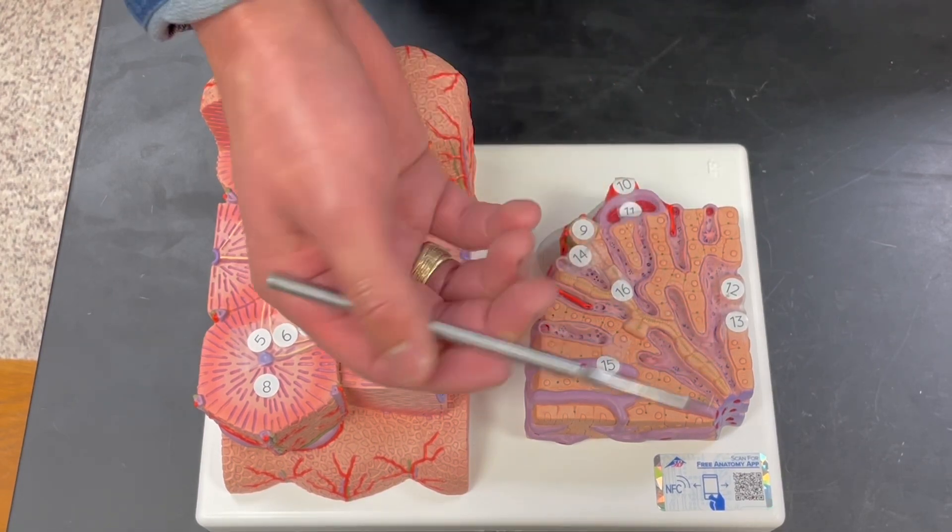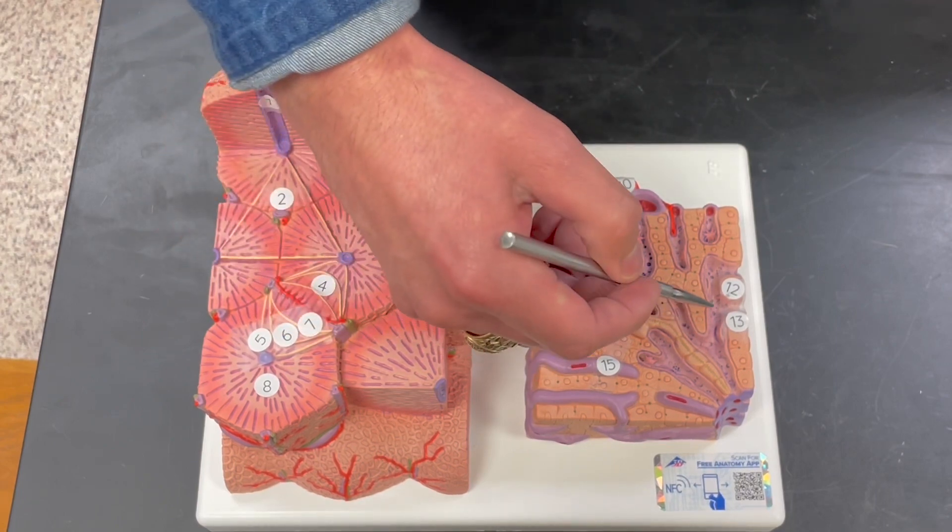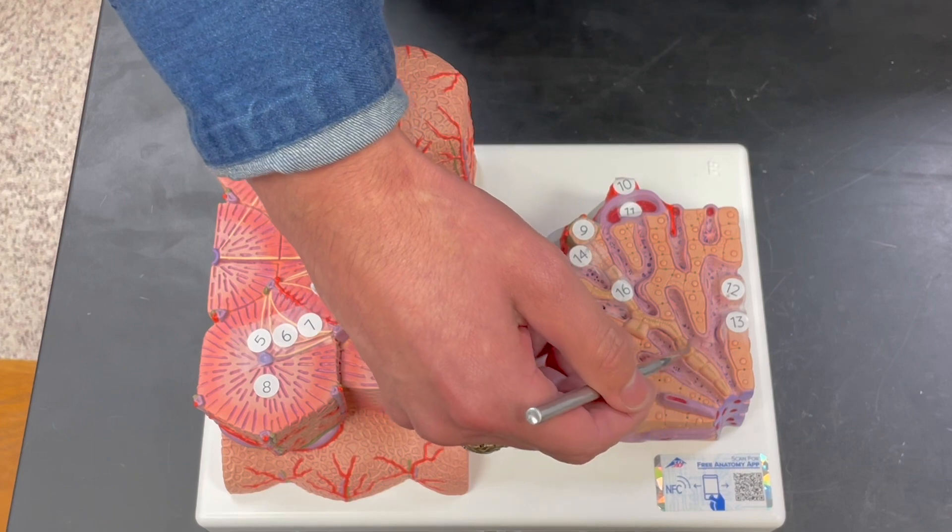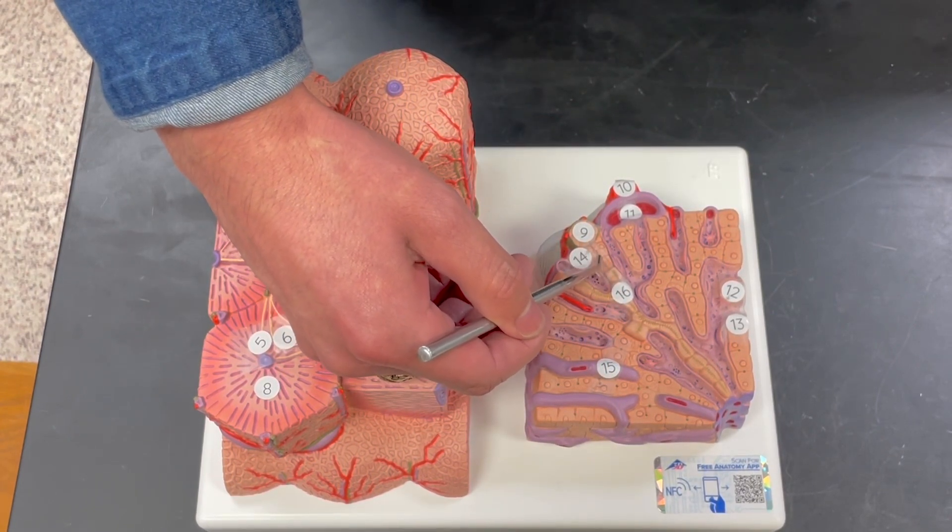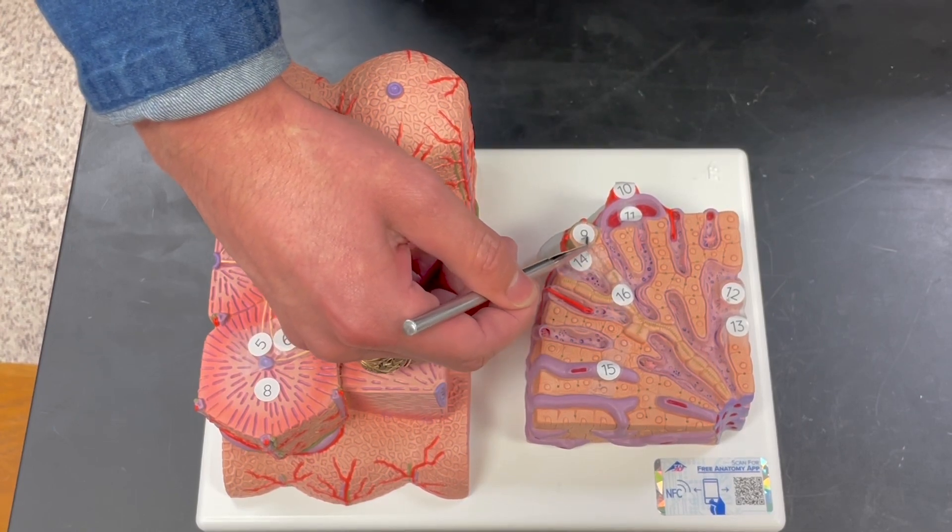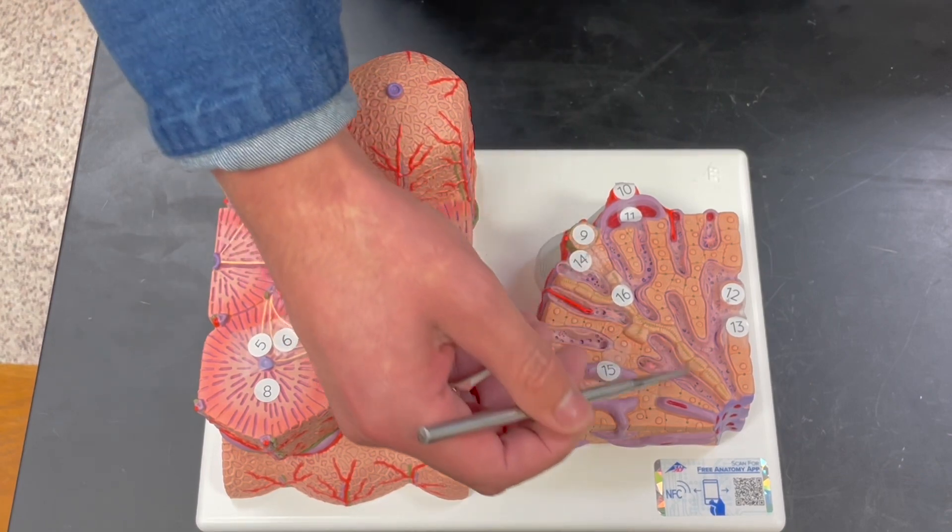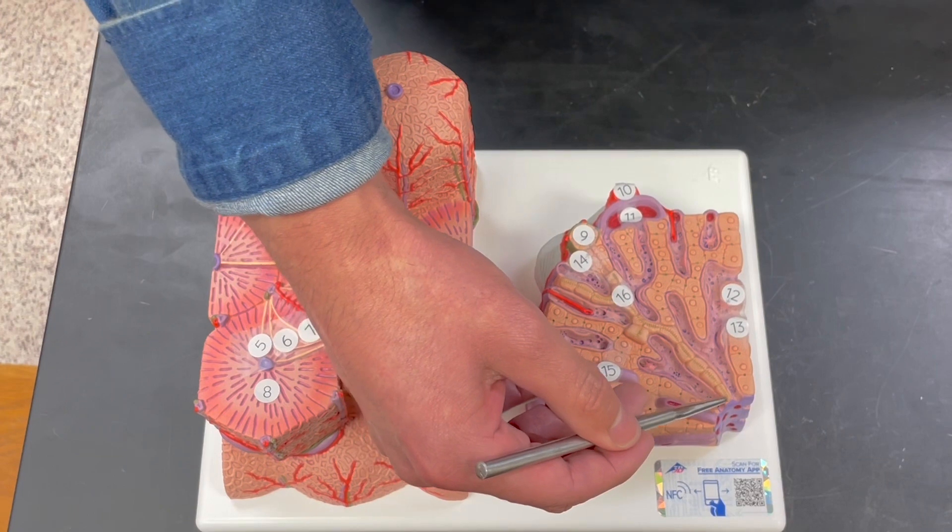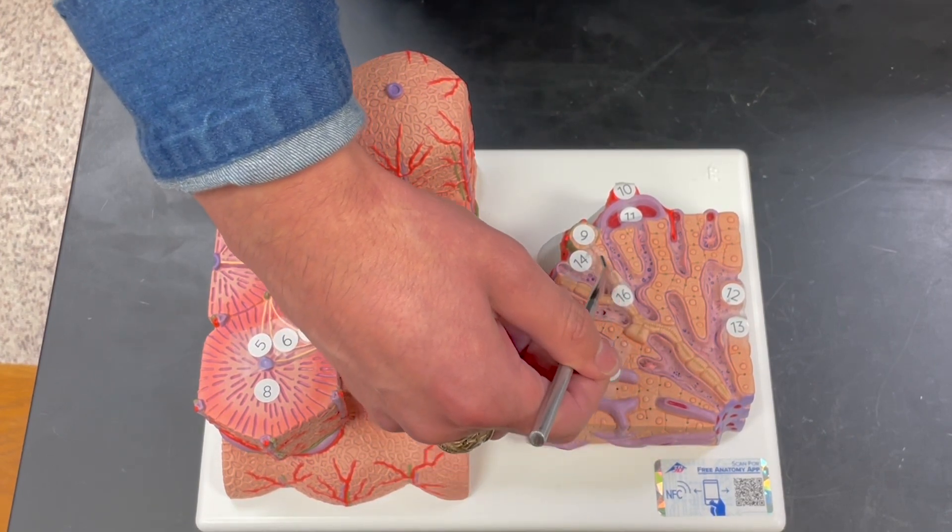One thing to consider is that the bile canaliculi, that's number 16, leads to number 14, the terminal bile duct, which leads to here, the interlobular bile duct. Bile is flowing because bile is produced in the liver, so it's produced by the liver cells and then it travels in this direction.